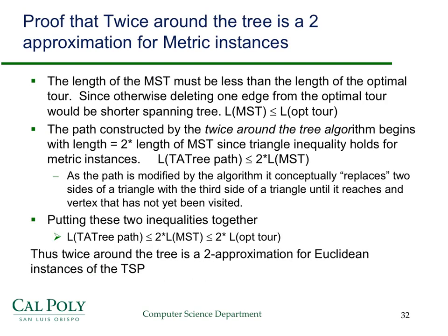Here is the proof that twice around the tree is a 2-approximation for metric TSP. First: the length of the minimum spanning tree must be less than the length of the optimal tour. This is obvious — if the MST were longer than the optimal tour, we could delete one edge from the optimal tour to get a spanning tree shorter than the minimum spanning tree, which is a contradiction. So the optimal tour length must exceed the MST length.